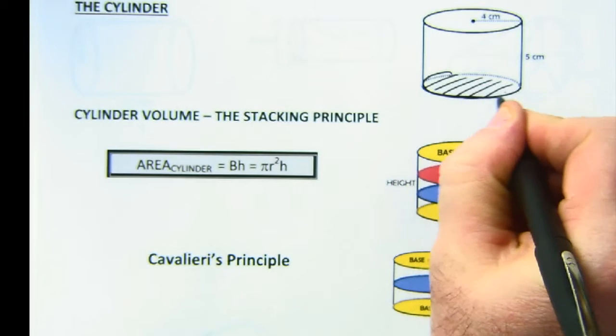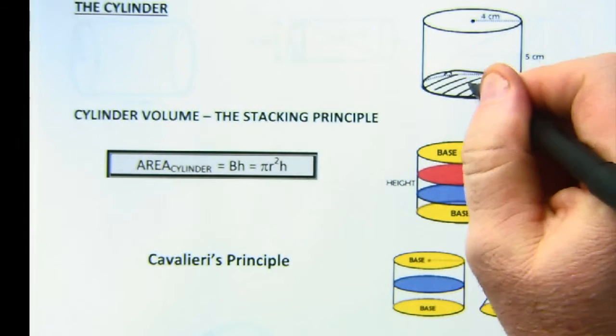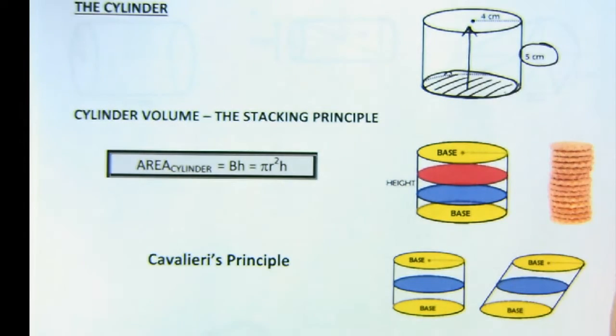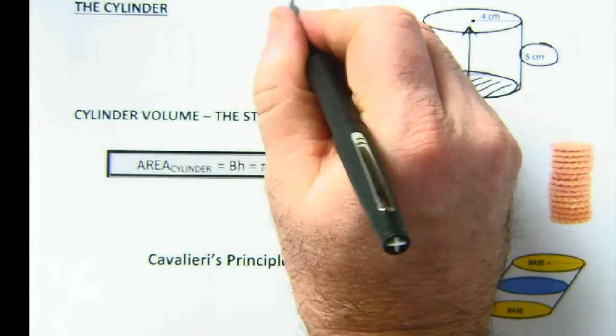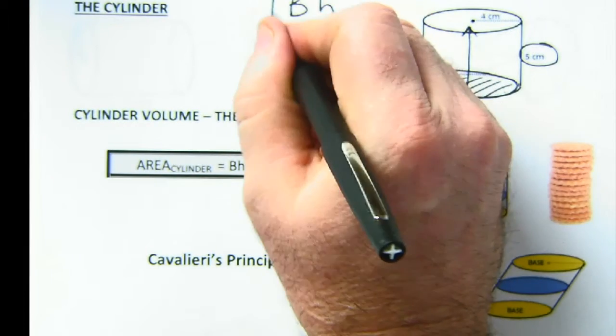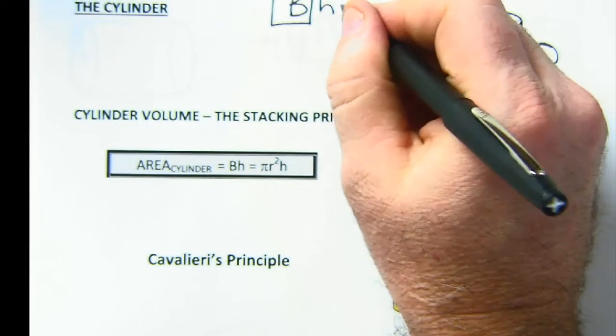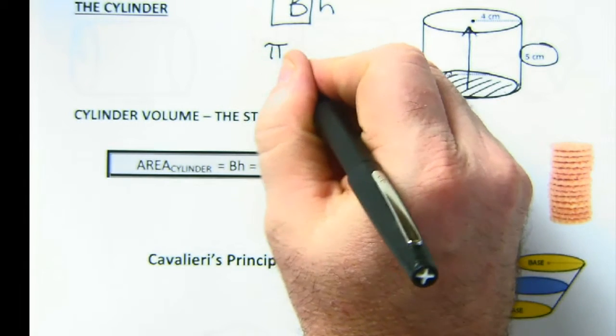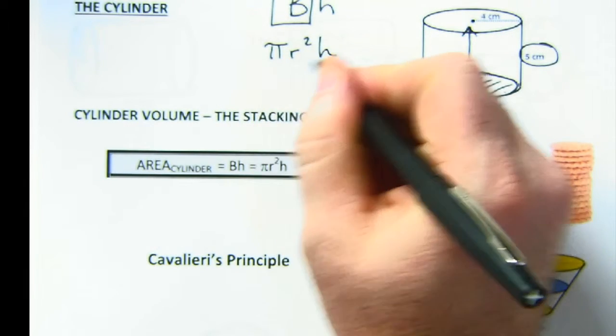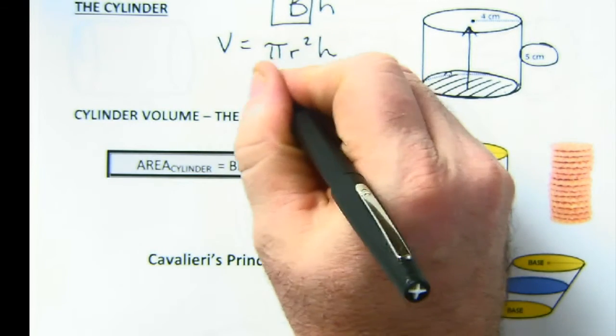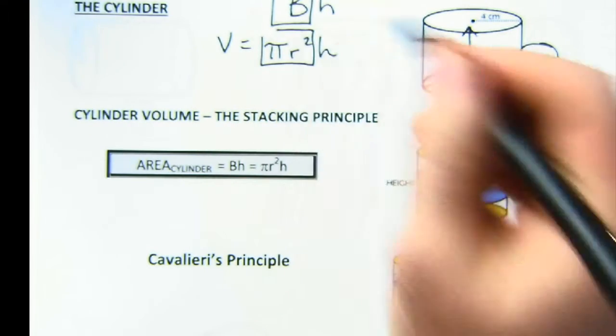But all the ones we deal with are circular bases, so the idea of the volume of this is one circle stacked over a height. So just like the prism, basically you take one base and then you multiply it by the height. In this case though, the base is always a circle times the height, and so this is your base and your height.